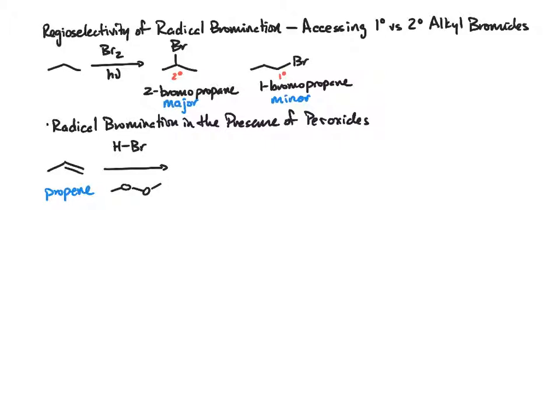A peroxide bond has an oxygen-oxygen sigma bond, and so we're going to use the tert-butyl hydrogen peroxide.